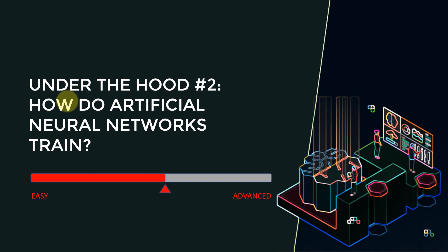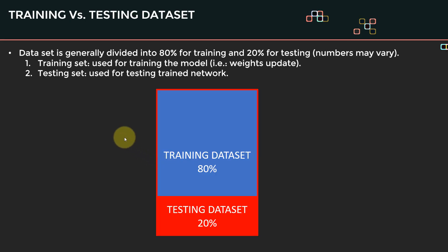What I'm going to cover now is 'Under the Hood Part 2,' and we're going to dig a little bit deeper into how we actually train artificial neural networks. We'll learn about the difference between the training dataset and the testing dataset. Please note that this lecture is at an intermediate difficulty level, so hang in there.